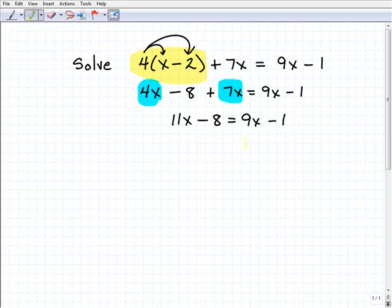Next, I want to move all my variable terms to the left-hand side of the equation and all my numbers to the right. I'm going to first work on getting rid of this 9x on the right-hand side, so I'm going to subtract 9x here. That means I've got to subtract it on the left-hand side also.